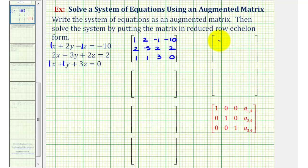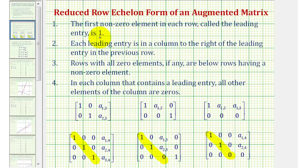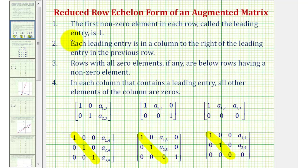Now let's review reduced row echelon form of an augmented matrix. Number one, the first non-zero element in each row, called the leading entry, must be one. Number two, each leading entry, or one, in a column is to the right of the leading entry, or one, in the previous row. Number three, rows with all zero elements, if any, are below rows having a non-zero element. If these first three conditions are met, we have row echelon form. This fourth condition is what makes reduced row echelon form: in each column that contains a leading entry, or one, all other elements of the column are zero.